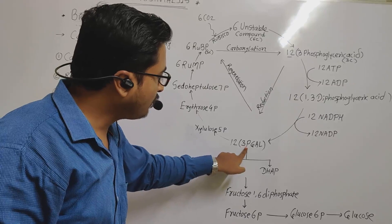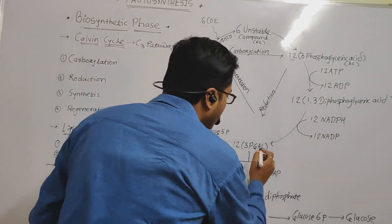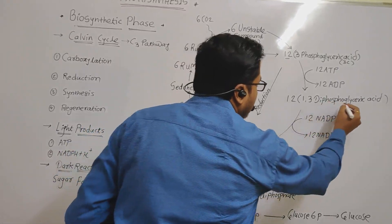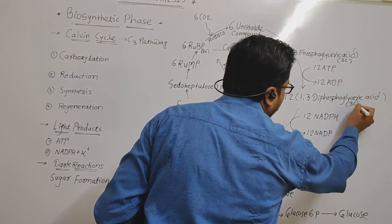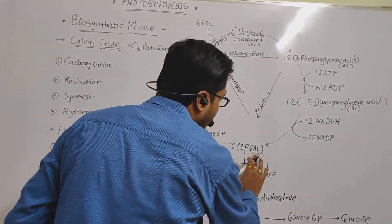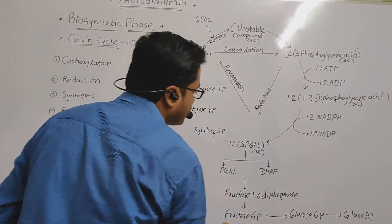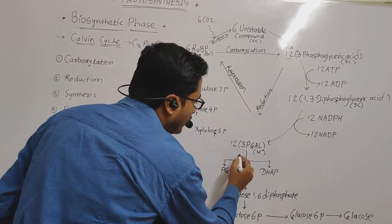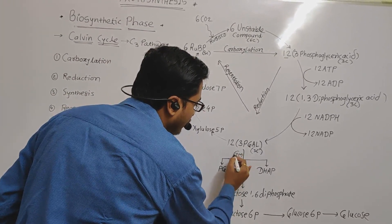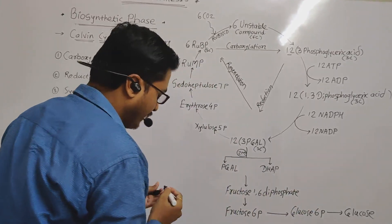We have 12 molecules of 3-PGAL. One PGAL has 3 carbons, so 12 PGAL molecules have 36 carbons total. Out of 12 molecules, 2 molecules of PGAL are utilized in the synthesis of glucose — that is 6 carbons going into glucose synthesis.